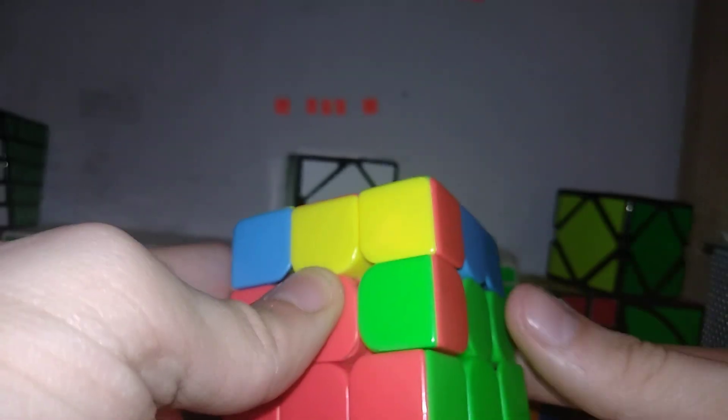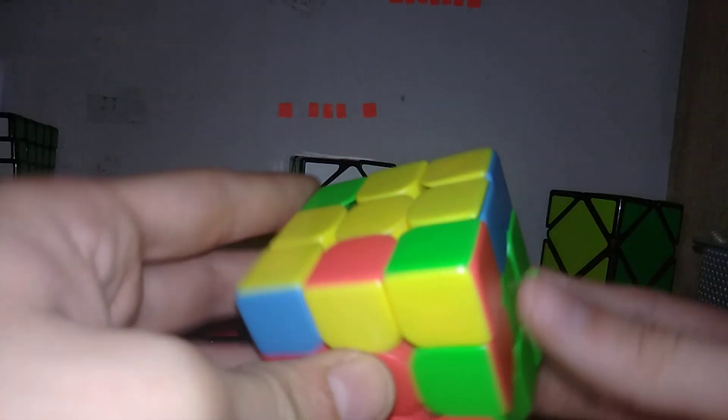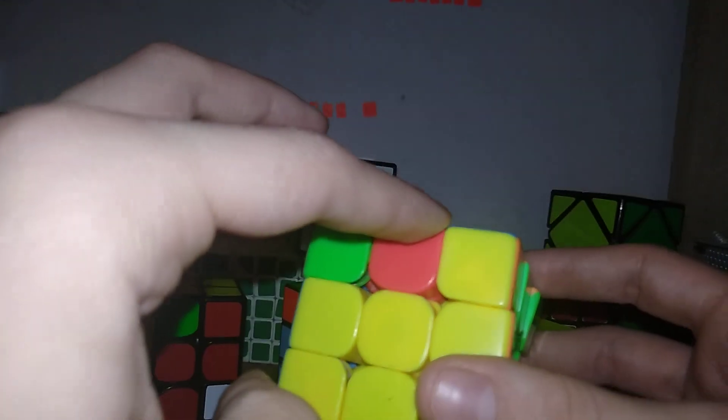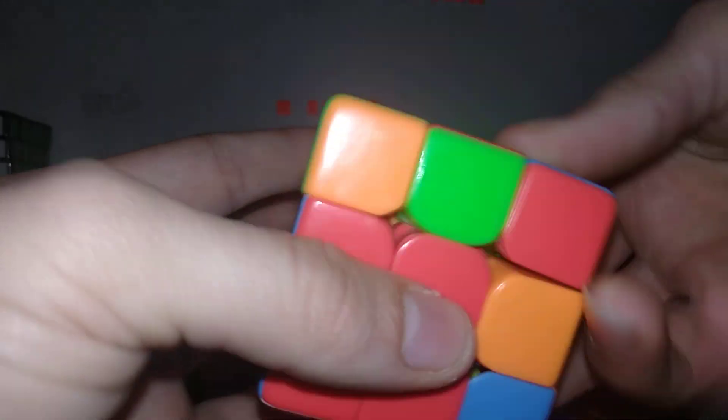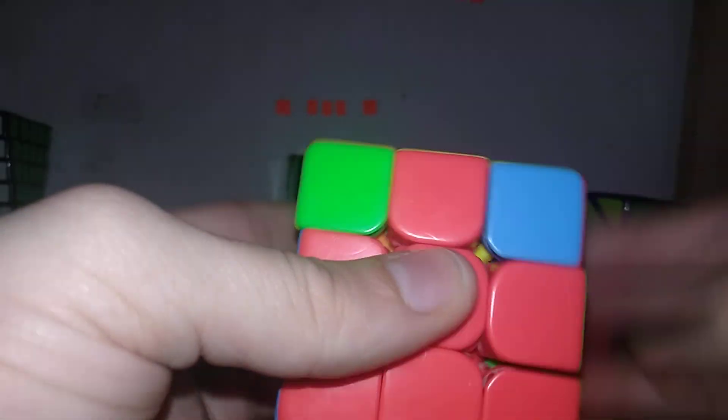Or there are some really fancy algorithms, like putting the flipped edge in the back. You can do R2 U2, F R2 F' U2, R' U2, R' U R'. Yeah, it's quite fast actually.